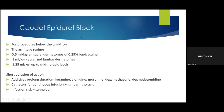Local anesthetic agents can be used as topical creams, for local infiltration, for caudal epidural blocks, epidural blocks, nerve blocks (including continuous perineural catheter infusions), and truncal blocks such as the TAP block or serratus anterior block. Caudal epidural blocks are the most commonly performed regional blocks in children — they are safe, easy to perform, and used for procedures below the umbilicus.